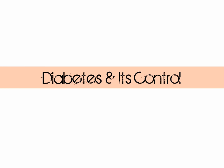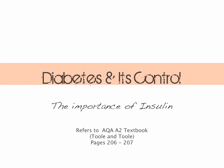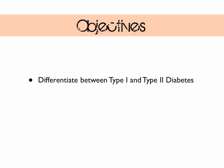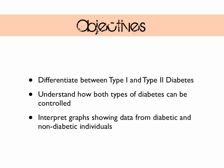In this video we're going to explore the chronic condition diabetes and how it's controlled. This video relates to the AQA specification for A2 biology, using the AQA A2 textbook by Glenn and Susan Toole, pages 206 to 207. Our objectives are: to differentiate between type 1 and type 2 diabetes, understand how each condition can be controlled, and interpret graphs showing data from diabetic and non-diabetic individuals.